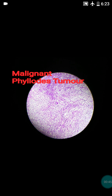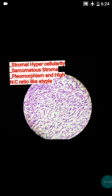This was a well-circumscribed 15 centimeter size growth received from the breast. The phyllodes tumor can be divided into benign, borderline, and malignant based on nuclear atypia, mitosis, and necrosis. In the malignant phyllodes tumor, there is greater than 10 mitoses per 10 high power fields, marked nuclear pleomorphism, marked atypia, and stromal hypercellularity.